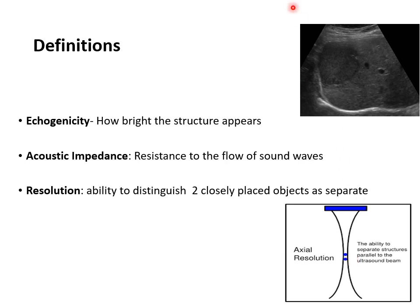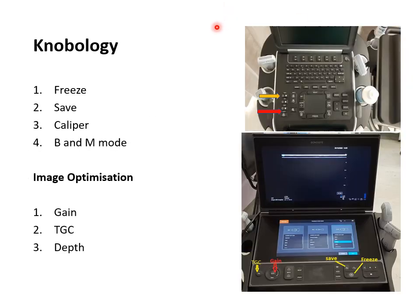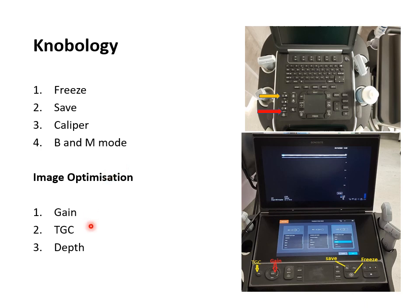Moving on to knobology — the buttons used to optimize or save images. The first is freeze: as soon as you hit freeze, the image becomes static on screen and can be saved. The caliper allows you to measure the size or diameter of a structure. There is also a B and M mode button. When scanning a patient we use B mode, M mode, color Doppler, and other settings. B mode is brightness mode. On the machine you have freeze, save, caliper, and B and M mode.